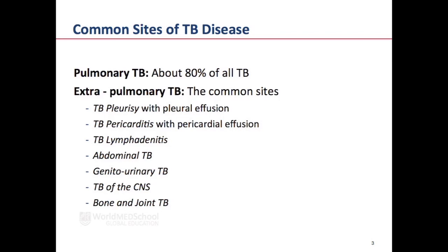Tuberculosis can affect any part of the body. However, 80% of all tuberculosis occurs in the lung. 20% occurs outside the lung, and common sites include the pleural membrane — TB pleurisy, usually presenting with pleural effusion — the pericardium, TB pericarditis, usually presenting with a pericardial effusion, hilar lymph nodes, abdominal TB, the genitourinary system, the central nervous system, and bone and joint disease.